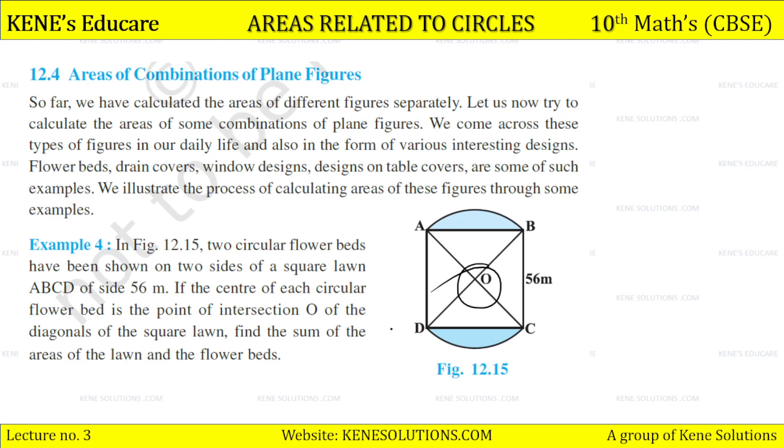Of the diagonals of the square lawn, find the sum of the areas of the lawn and the flower beds. So what do you need here, students? If you know this sector area, you can get the segment area. If you have the triangle area, you can get the segment area.